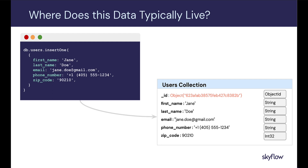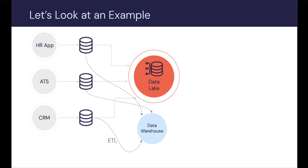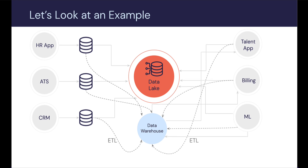What ends up happening is we typically store all this customer PII within our application database, intermingled with all our other data. Any modern company needs a lot of systems just to operate — an HR application, an applicant tracking system, a CRM — each with their own database and their own representation of customers or users. These can feed into a data lake, ETL pipelines into a data warehouse, and more applications can be added over time, creating more and more interdependencies.